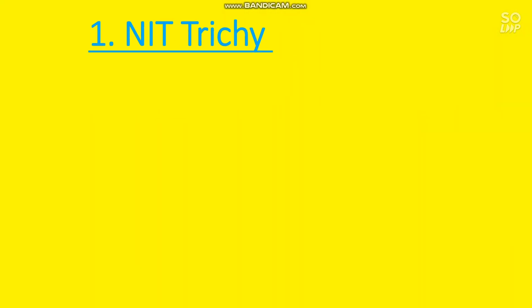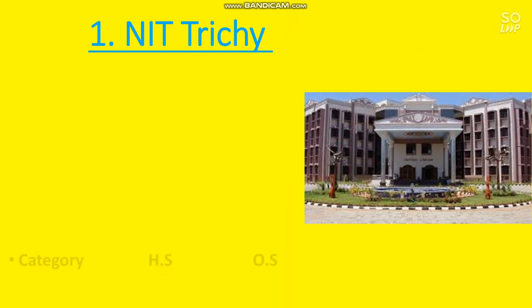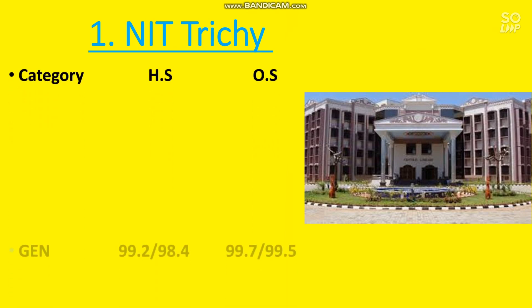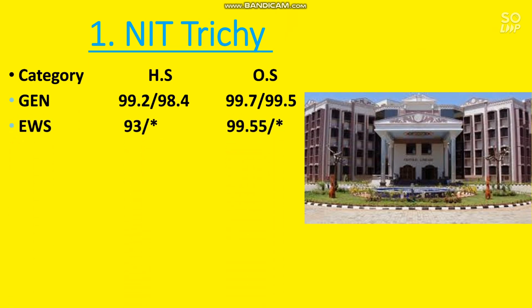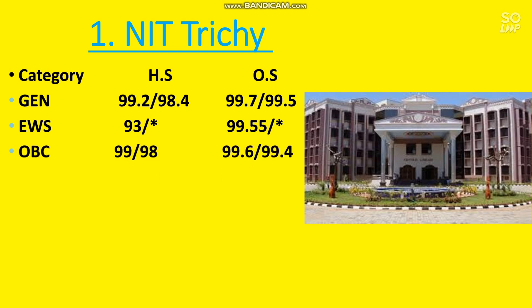The last one is number 1, NIT Trichy. For the EC branch you need to score at least 99.7 percentile for General. For EWS it is 99.55, OBC — 99.6, SC — 97.5, and ST — 97 percentile. This is all about the top 10 NIT EC minimum percentile required.